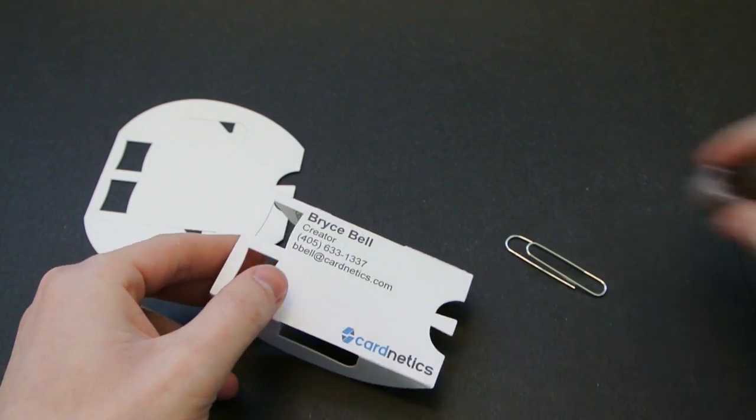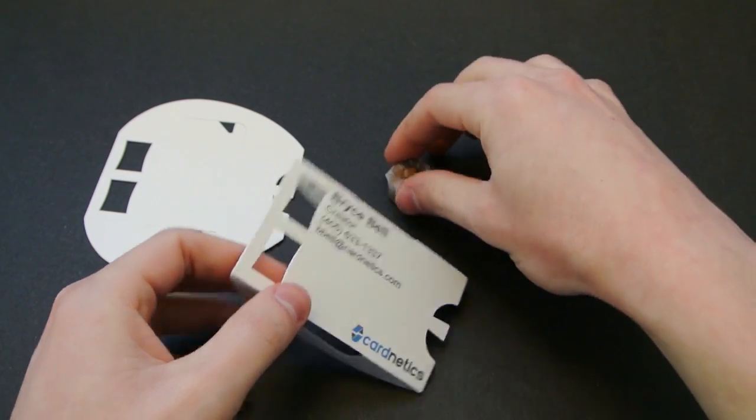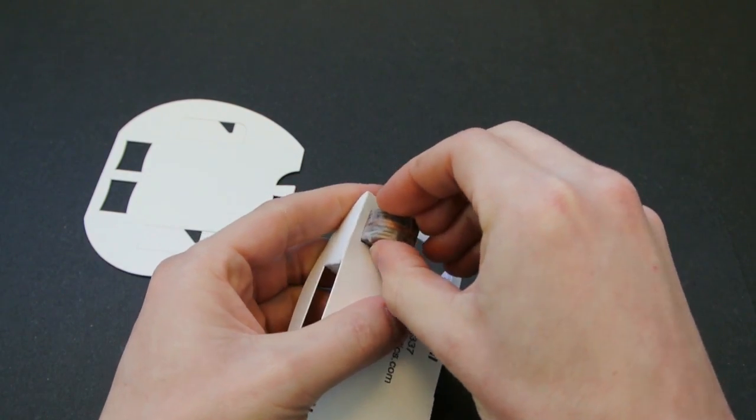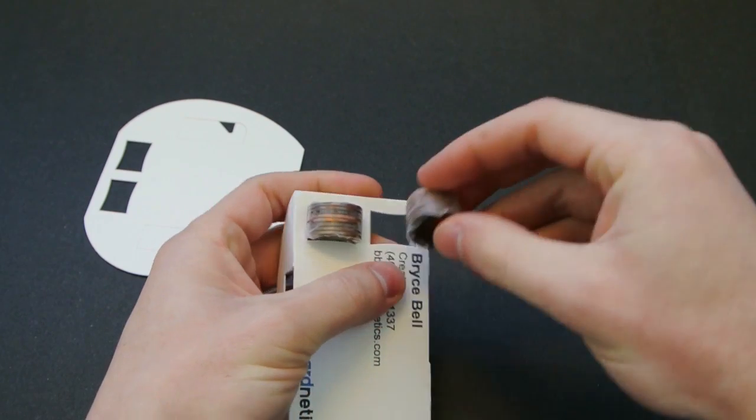The counterweights are 16 pennies, which are divided into two stacks and wrapped in tape. Those are just inserted into the front of the card.